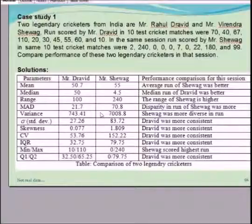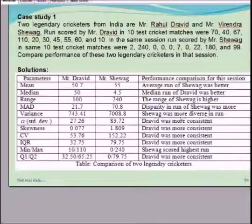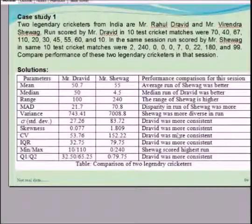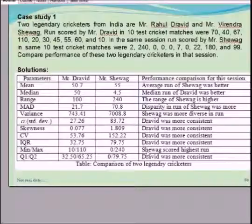Similarly, if you compare the variances, a lesser variance value means more consistent. A lesser standard deviation value means more consistent. Sehwag was more diverse in runs. If you compare standard deviation, Dravid was more consistent. If you compare the skewness and coefficient of variance, Dravid was more consistent. If you compare the IQR, and also the max, Sehwag scored the highest run.